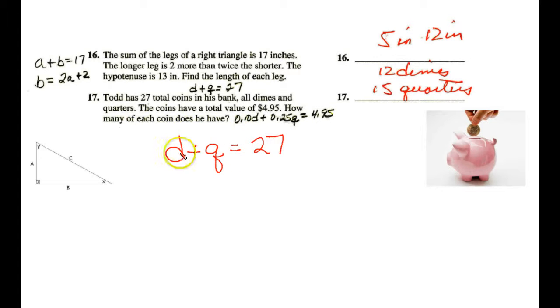Well, what is the dime worth? 10 cents. And the quarters are worth 25 cents. And all together, the number of dimes times 10, the number of quarters times 25, will equal 495. Now, since we've used substitution a couple of times, let's use elimination.